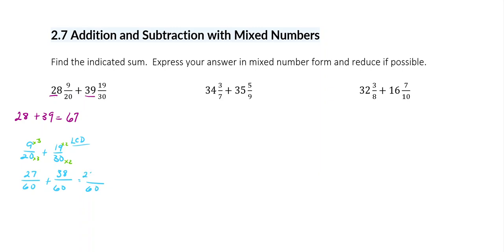So just like with adding fractions before, I'm going to add the numerators. 27 plus 38 is 65, so I get 65 over 60.